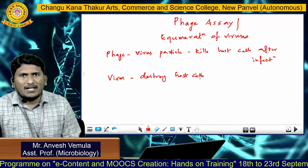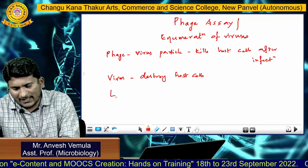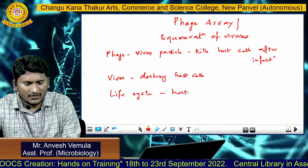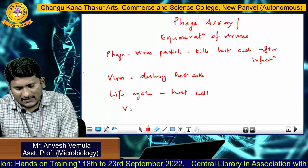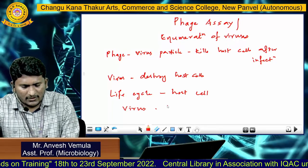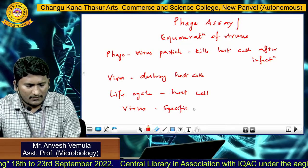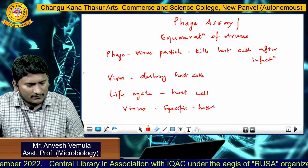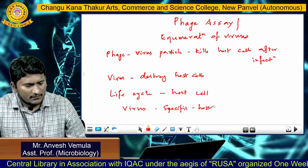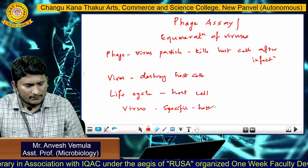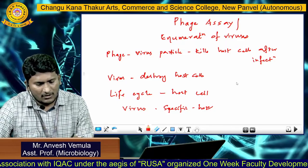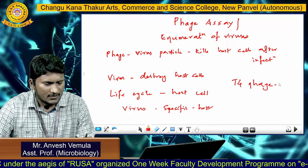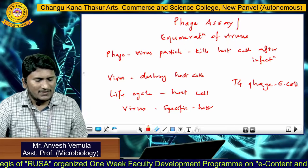When you study this Phage Assay, we need to know the life cycle of a virus — how it proceeds its life cycle using a host cell. Each and every virus is said to be specific for its host. We will take the example of T4 Phage, which requires a specific host called E. coli.